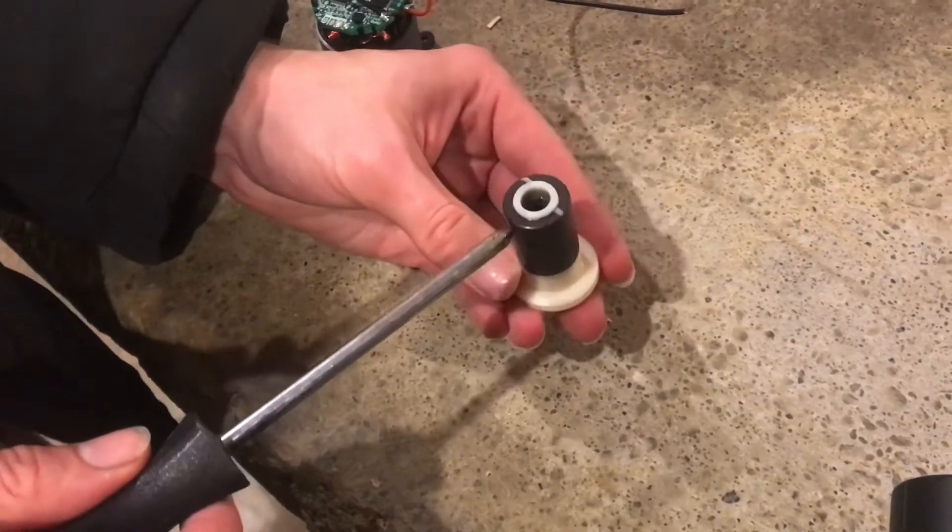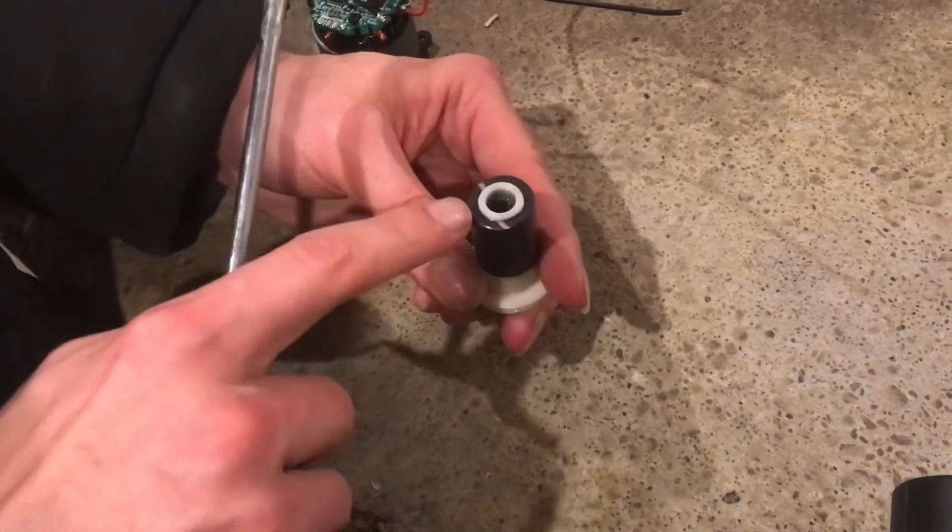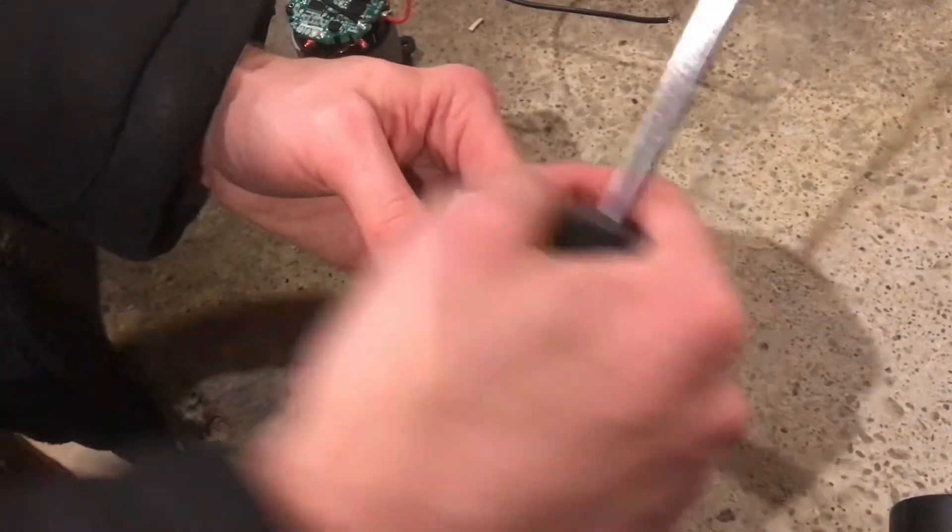Okay so when they constructed this magnet they designed it to have four poles: north, south, north, south.